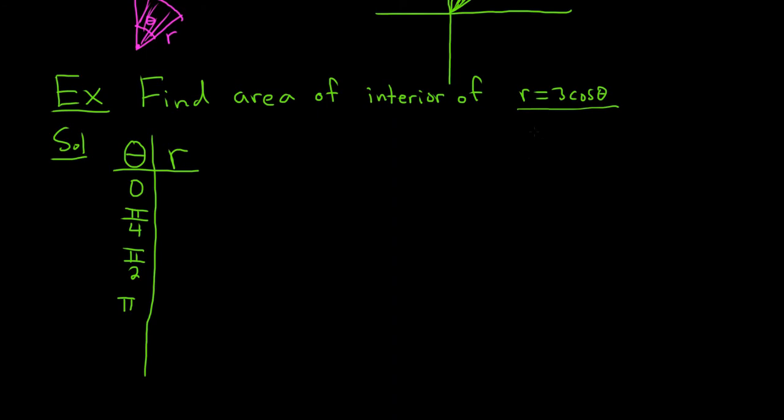So let's see. When theta is 0, we'll get R equals 3 times the cosine of 0. Cosine of 0 is 1, so we just get 3 times 1, so we get 3. So I'm going to put a 3 here.